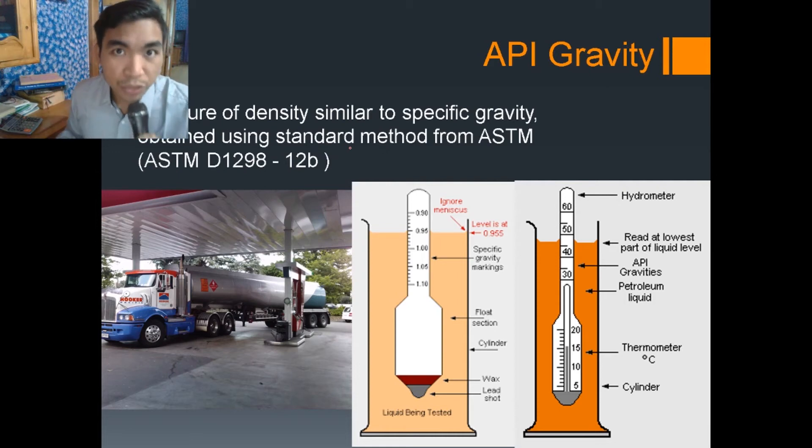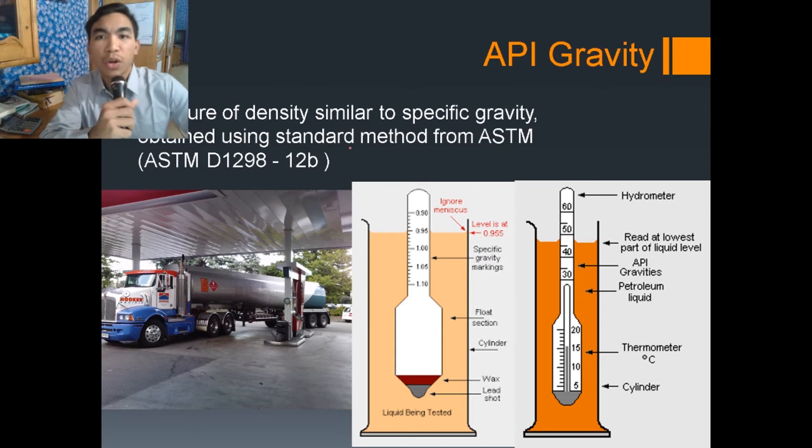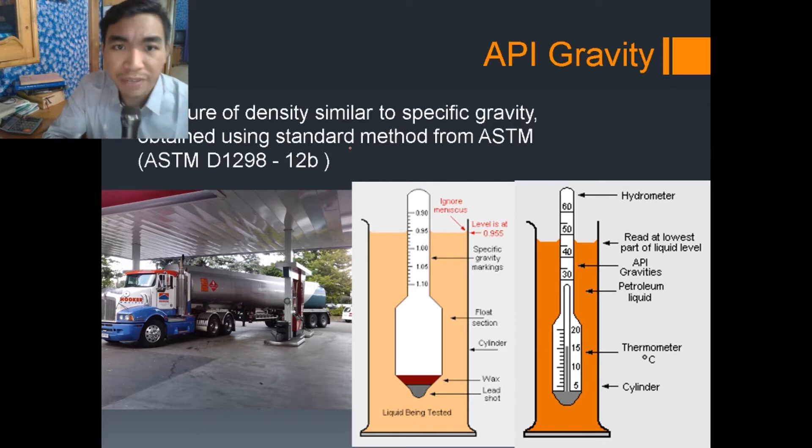Hey there everyone, welcome back to Oil and Gas Engineering YouTube channel. Today we are going to talk about API gravity. What is API gravity? API gravity is a measure of density similar to specific gravity obtained using a standard method.